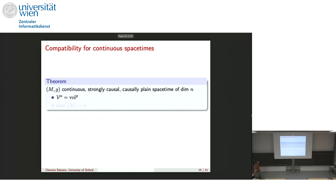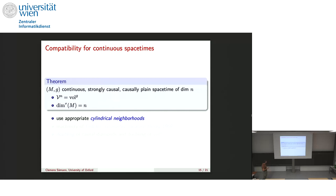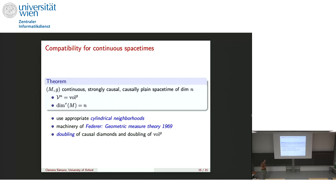Now, what about compatibility with the smooth case? We can show that for a continuous, strongly causal, causally plain spacetime of topological dimension n, the n-dimensional Lorentzian measure is actually the volume measure — fully compatible. This implies the synthetic dimension equals the topological dimension. The proof uses cylindrical neighborhoods, a refinement by Kuschel and Grant, machinery of Federer, and a doubling of causal diamonds together with the doubling property of the volume measure.